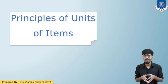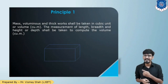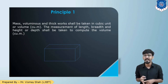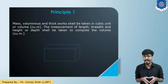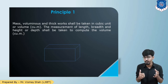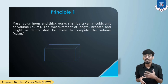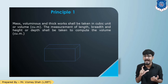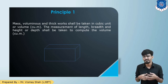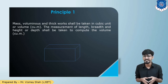Now let us see the principles of unit items. Principle 1: Mass, voluminous, or thick work shall be measured in cubic meters, by multiplying the length, breadth, and height or thickness or depth of the particular item of work. If any item of work has a three-dimensional quantity, measuring length, width, and height or depth or thickness gives the volume in cubic meters.